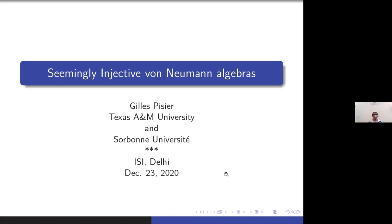Good afternoon, everyone. I'm very happy to welcome our today's speaker, Professor Gilles Pisier from Texas A&M University and Sorbonne University. He will be talking about seemingly injective von Neumann algebras. Before starting with the talk, I would like to request you all to keep your audio on mute. There will be a question and answer session at the end. If you have any questions, please do it over the chat box and wait for a signal from our coordinator, Professor Ihsan Patri, before unmuting your audio. So welcome, Professor Pisier. We can start.